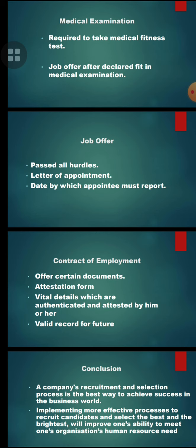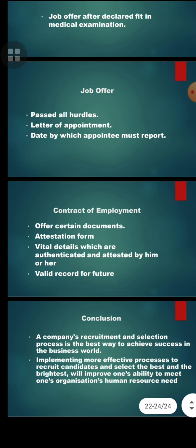In conclusion, a company's recruitment and selection process is the best way to achieve success in the business world. Implementing a more effective process to recruit candidates and select the best and brightest will improve one's ability to meet an organization's human resources needs. The recruitment and selection process is very important for a company to achieve success. Thank you.